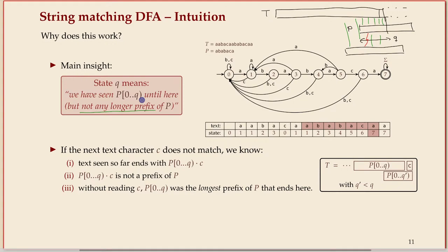You may wonder how a single automaton can work for all texts if it's only built on the pattern. The reason: all the information you need is this prefix of the pattern you've seen so far. The next step is to read the next character and see what can happen. If we're in state q and read character c, there are two options: it could be the next character of the pattern, in which case we advance to state q+1.